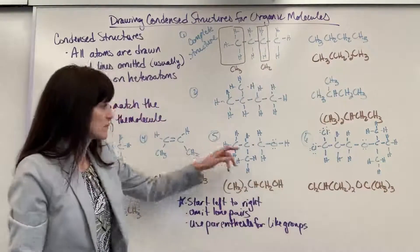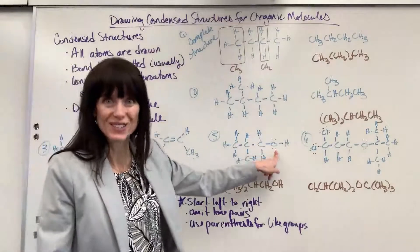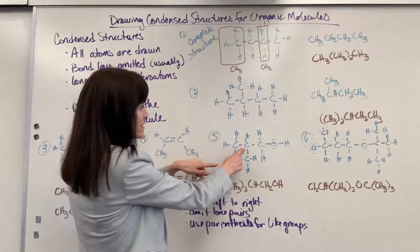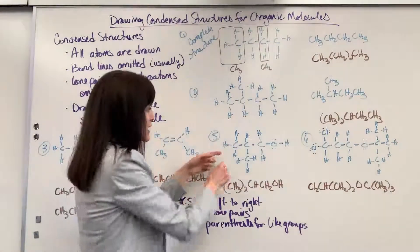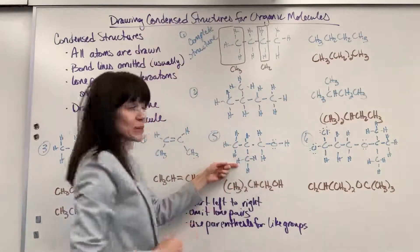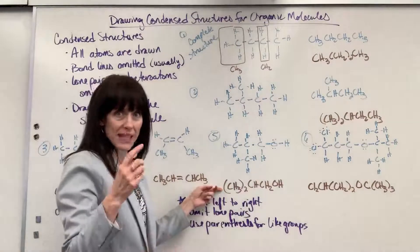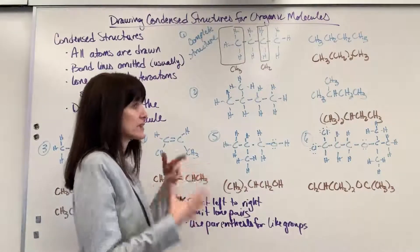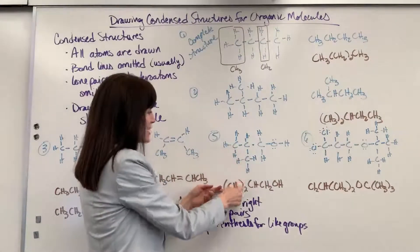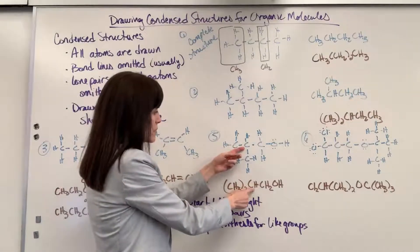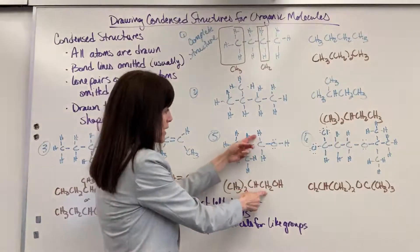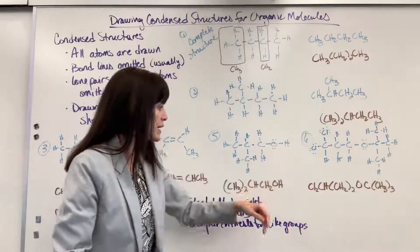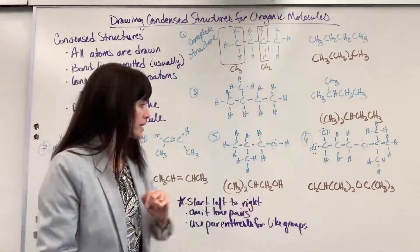Now we'll put a heteroatom — oxygen — into the molecule. Remember we leave off the lone pairs on heteroatoms. Looking at this carbon, there's a CH3 and a CH3 bonded to it, so I can write (CH3)2 using parentheses with a 2. Then there's a carbon with one hydrogen, a CH2, and for the oxygen at the end I just write OH — leaving off the lone pairs.